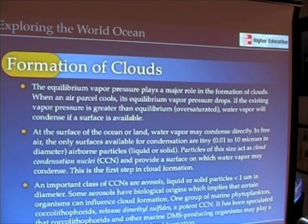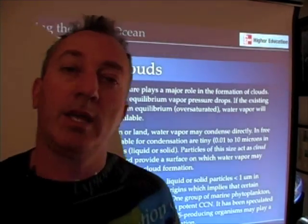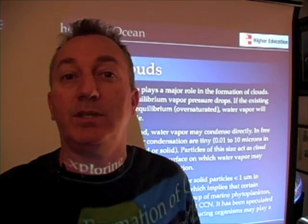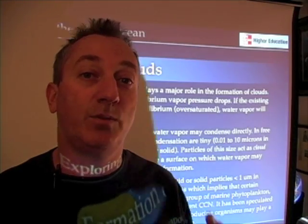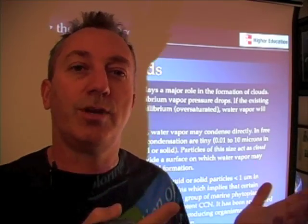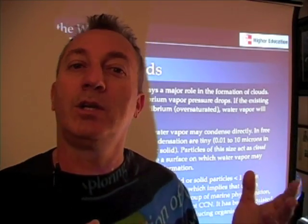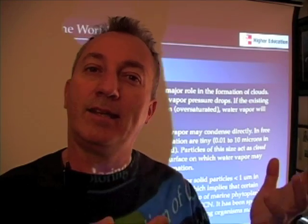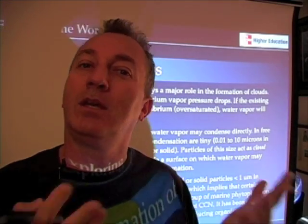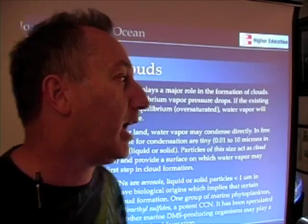Let's talk about clouds, since we've been discussing evaporation and precipitation. The equilibrium vapor pressure we just talked about has an influence on cloud formation. If the existing vapor pressure is greater than the equilibrium vapor pressure — supersaturated conditions — then water vapor is going to tend to fall out of the air and form clouds, and that's exactly what happens.